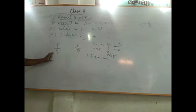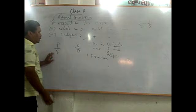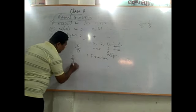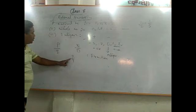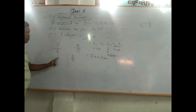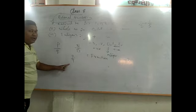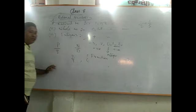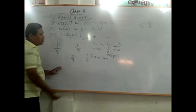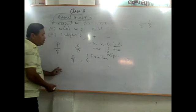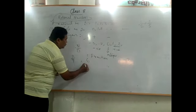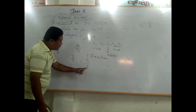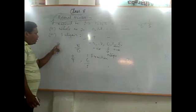For example, 2 by 9 is in the form of p by q, so it is a rational number. Is 6 a rational number? Yes, 6 is a rational number because it can be expressed as 6 divided by 1, which is in the form of p by q. So 6 is also a rational number.